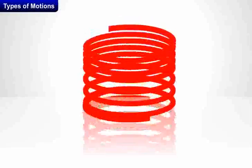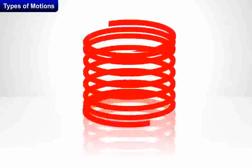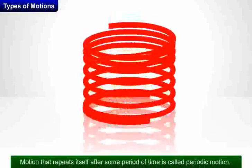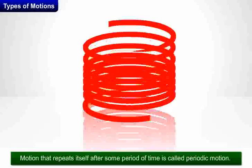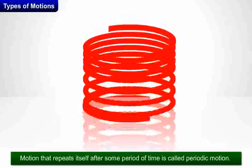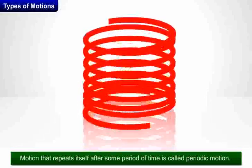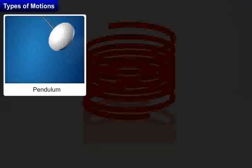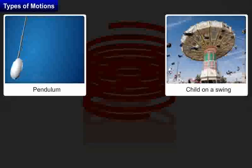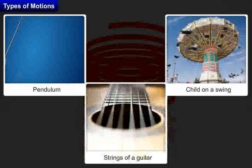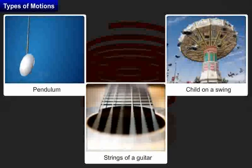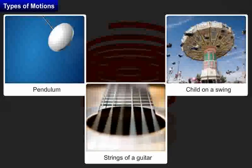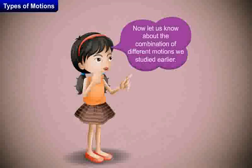Now, let us learn about periodic motion. Motion that repeats itself after some period of time is called periodic motion. Motion of a pendulum, motion of a child on a swing, and strings of a guitar are some of the examples of periodic motion.